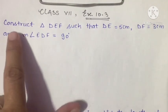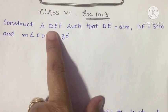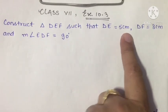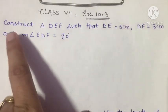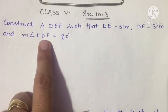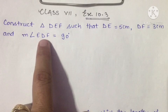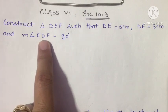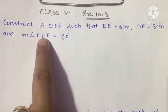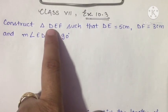Question number one: construct triangle DEF such that DE is equal to 5 cm, DF equals 3 cm, and the measurement of angle EDF is 90 degrees. The letter in the middle of the angle name tells us where the angle is — the middle letter D means the 90-degree angle is at vertex D.